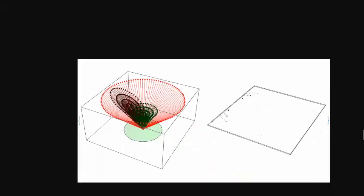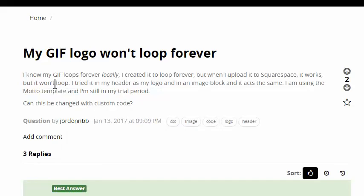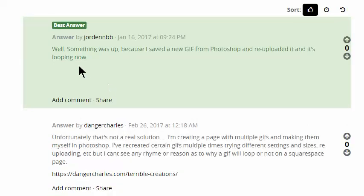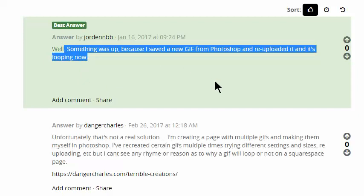I mean, that's seriously all I'm opening. I'm opening in that window is that GIF. If I am opening a GIF to look at that GIF, I want it to continue playing. I don't want it to just stop after two plays through. And so, this guy is saying, I know my GIF loops forever locally, but when I uploaded it to Squarespace, it works, but it won't loop. Then somebody says, well, something was up because I saved a new GIF from Photoshop and re-uploaded it, and it's looping now.